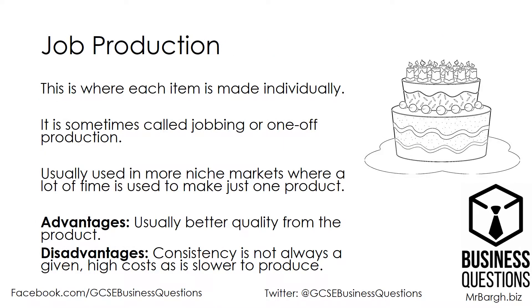First, let's talk about job production. This is where each item is made individually. It is sometimes called jobbing or one-off production. It is usually used in more niche markets where a lot of time is used to make just one product.